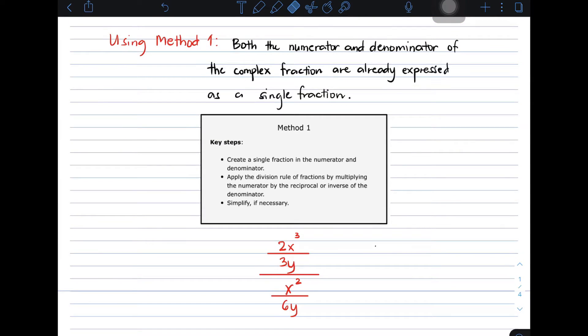So we have here in method number one how to do it. First, you need to create a single fraction in a numerator and denominator. Second, you need to apply the division rule of fractions by multiplying the numerator by the reciprocal or inverse of the denominator. And lastly, don't forget this one, simplify if necessary.